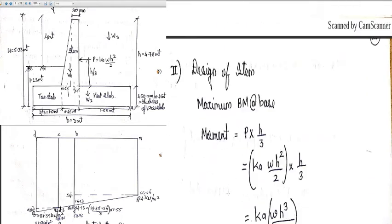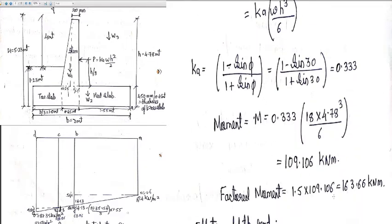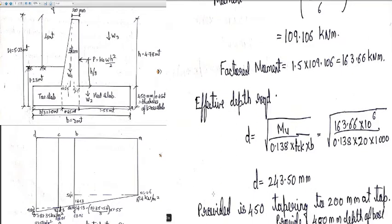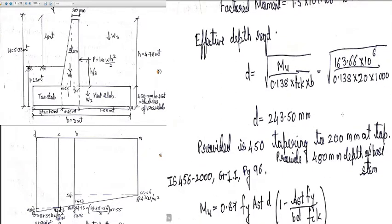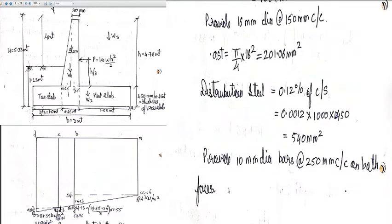For the stem design, we arrived at a moment of 163.6 kilo-Newton per meter, calculated the required depth, and provided a tapering section — 200 mm at the top and 450 mm at the base. The reinforcement provided was 10 mm diameter bars at 250 mm center-to-center on both faces.